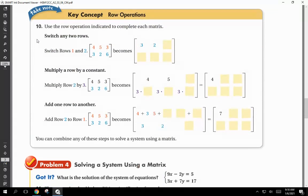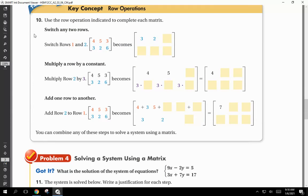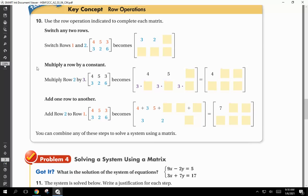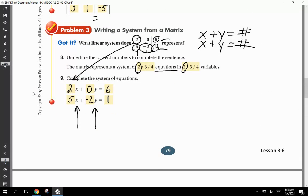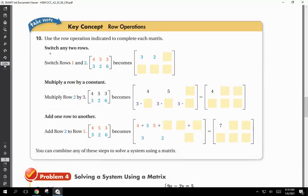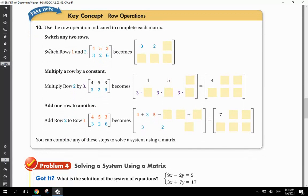Next page. Key concept, row operations. Use the row operation indicated to complete each matrix. Let's go back. What our quiz is going to be like tomorrow. Our quiz, I'm going to ask a question 100% from this. 100%. Might be the same question, actually. Hint, hint. Key concept, row operations. Use the row operation indicated to complete each matrix.